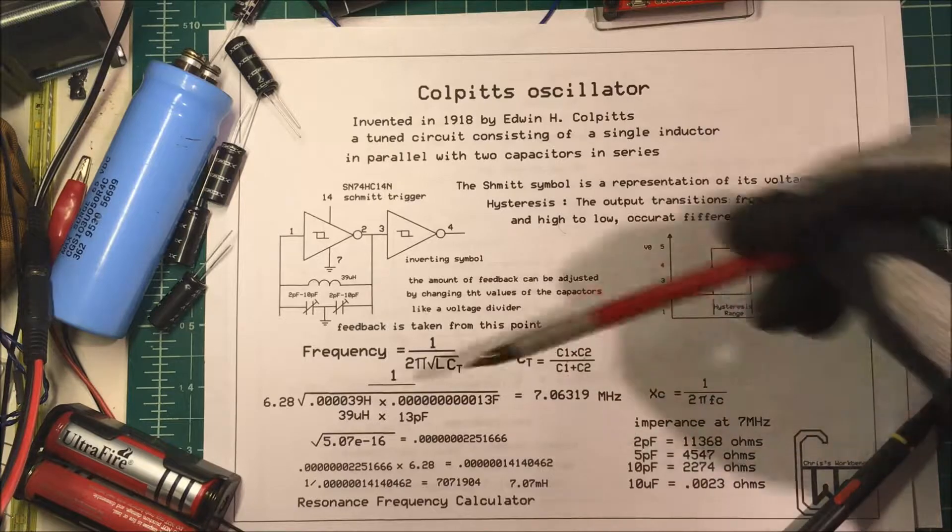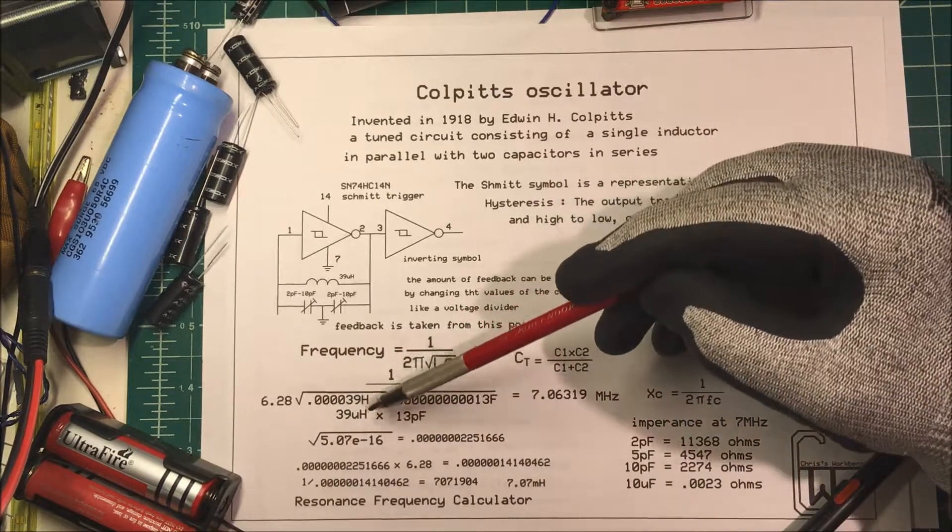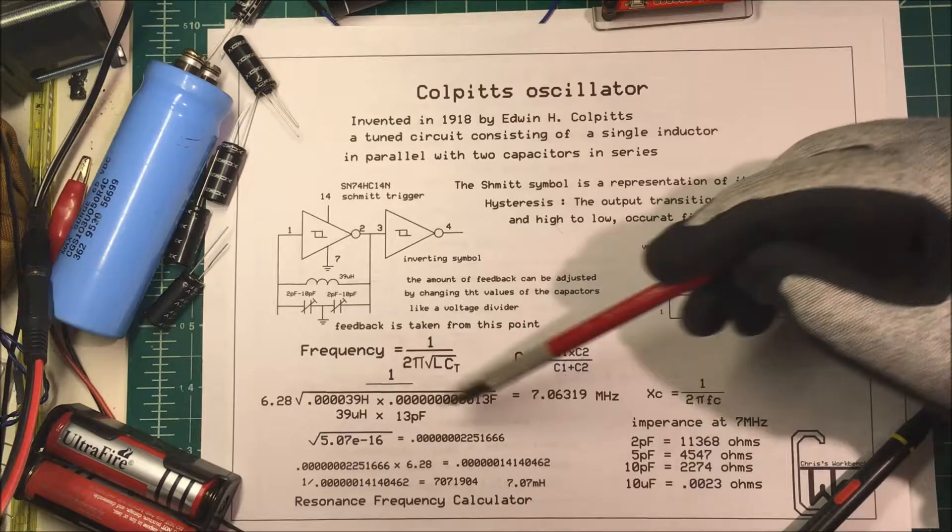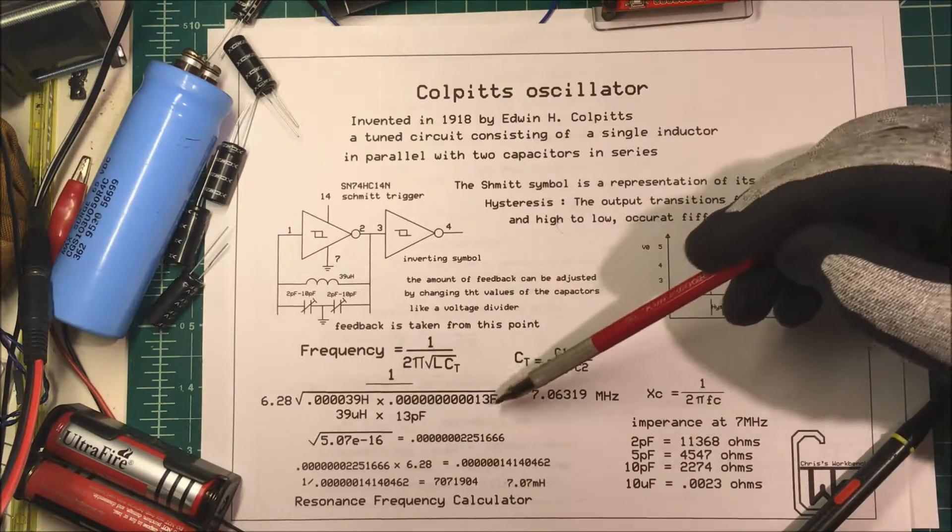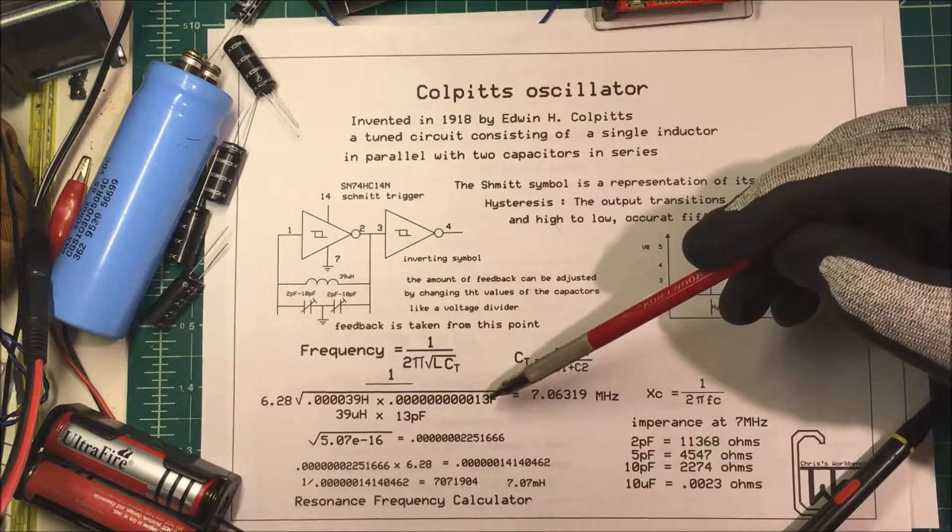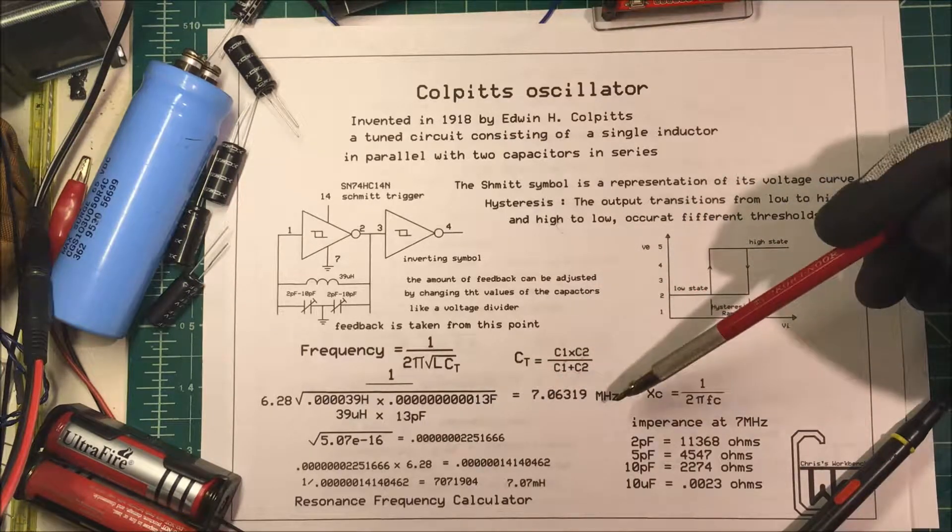So now I happen to have a 39 microhenry inductor so I just chose that and I plugged in some picofarads until it came up to 7 megahertz.